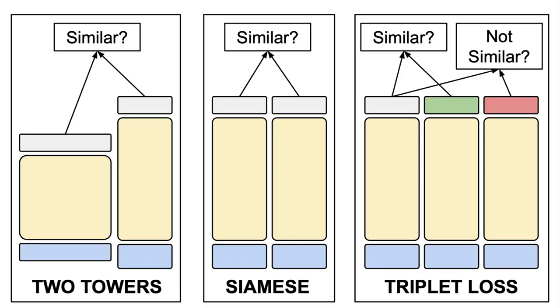And that's basically it folks. These three deep learning architectures—two towers, Siamese networks, and triplet loss—offer unique solutions to different challenges in the realm of machine learning for computing the similarity between inputs.